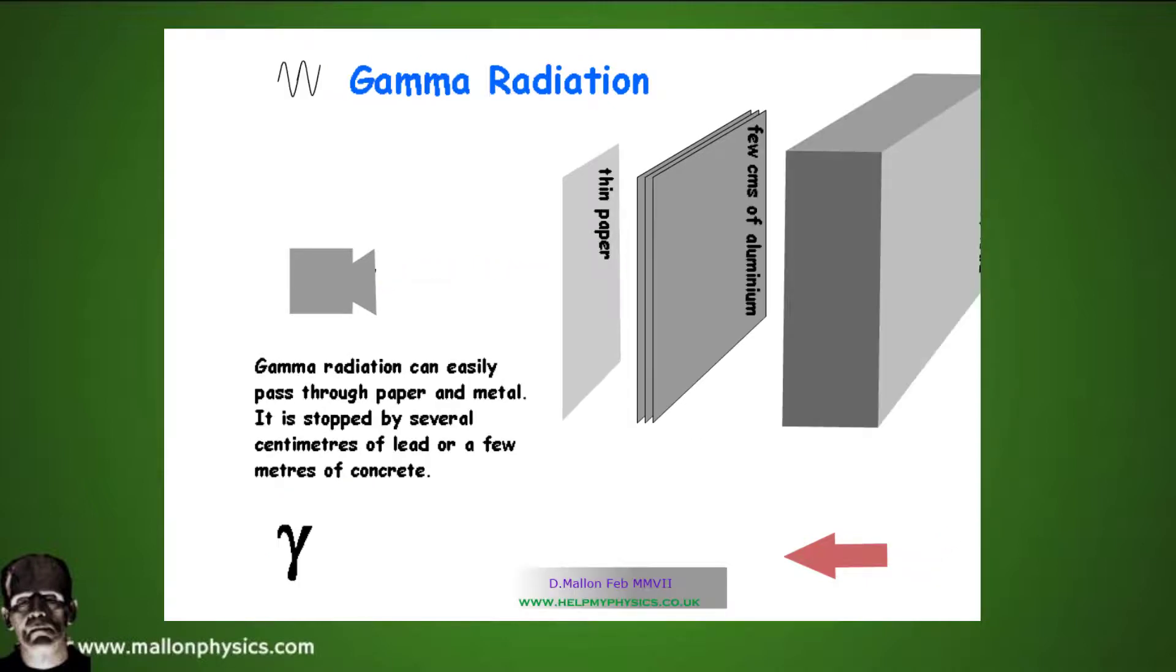Gamma radiation on the other hand is not a particle, but it's almost like a flash of electromagnetic radiation. It will travel for enormous distances if not stopped. It will pass easily through thin paper and a few centimeters of aluminum or thin metal.